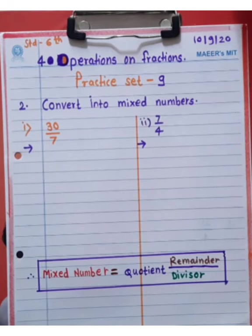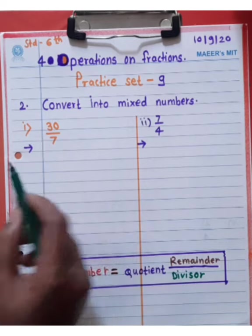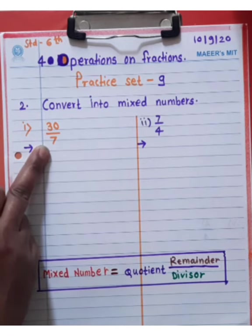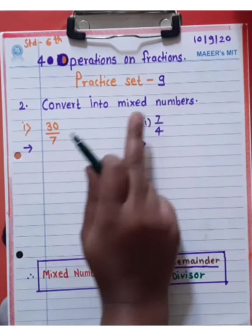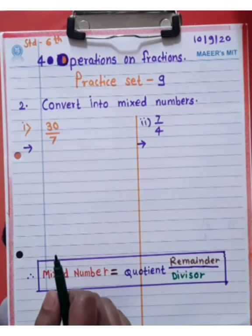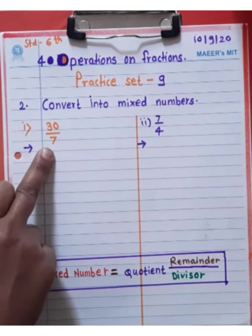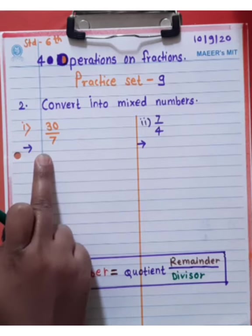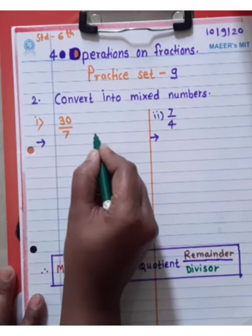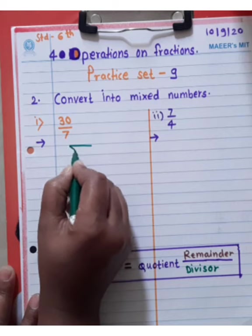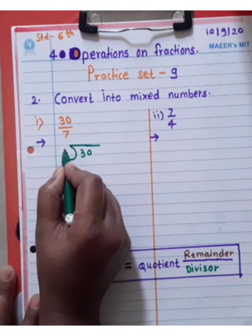Look at these students. Here, an example is given. 30 divided by 7. This is an improper fraction. These improper fractions get converted into mixed numbers. How do you do this? Look at this student. 30 divided by 7.